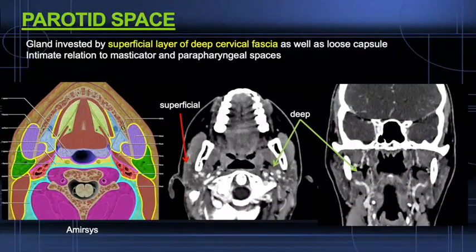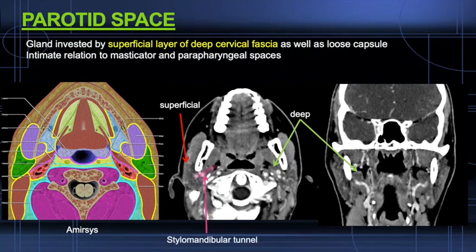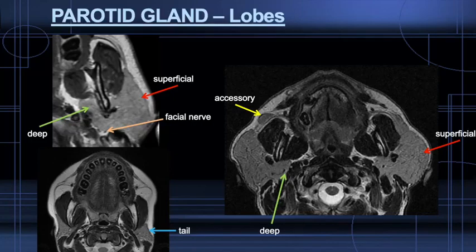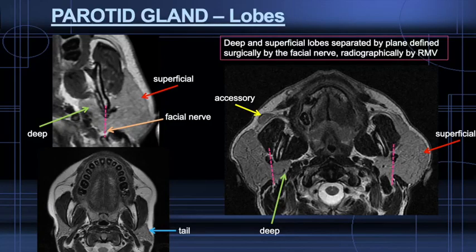The parotid gland has its own space in the head and neck, invested by the superficial layer of deep cervical fascia, with intimate proximity to the masticator and parapharyngeal spaces. The gland has both superficial and deep lobes bridging at the stylomandibular tunnel. The separate lobes are nicely depicted on MR images, and the most inferior portion of the superficial lobe is called the tail, roughly at the level of the angle of the mandible. The deep and superficial lobes are separated by an anterior-posterior plane defined by the proximal facial nerve surgically, and by the retromandibular vein on most routine imaging.